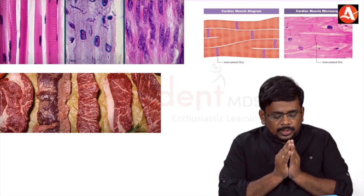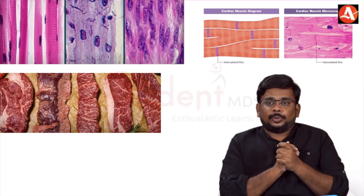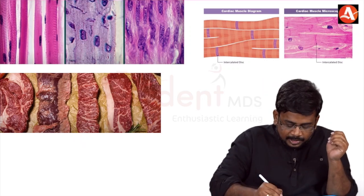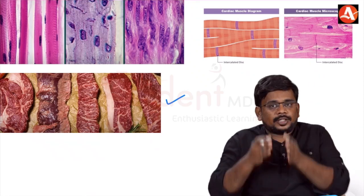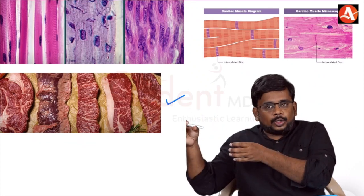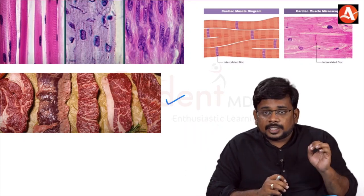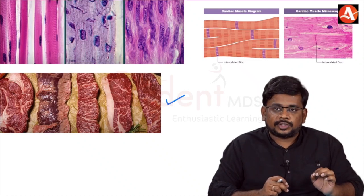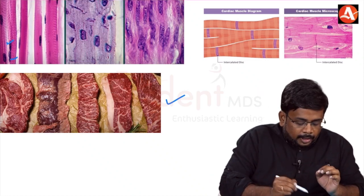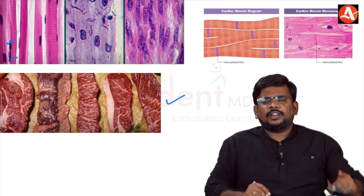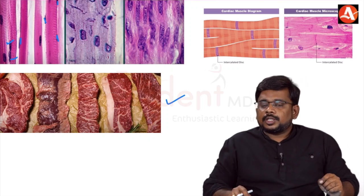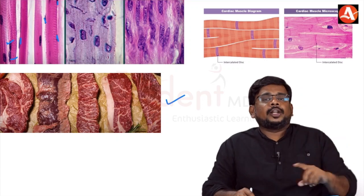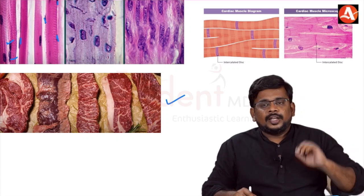How to identify skeletal muscle: it looks like parallel ribbons of muscle fibers arranged parallel to each other. Skeletal muscles are multi-nucleated — a very important distinguishing feature — and the nucleus is located at the periphery. If you see multi-nucleated fibers with peripheral nuclei, it is skeletal muscle.